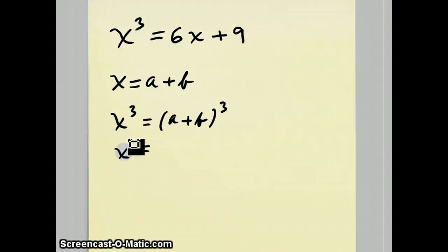But by binomial expansion, a plus b cubed is a cubed plus 3a squared b plus 3ab squared plus b cubed.